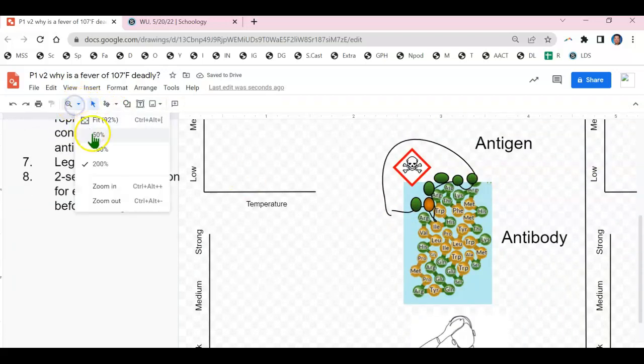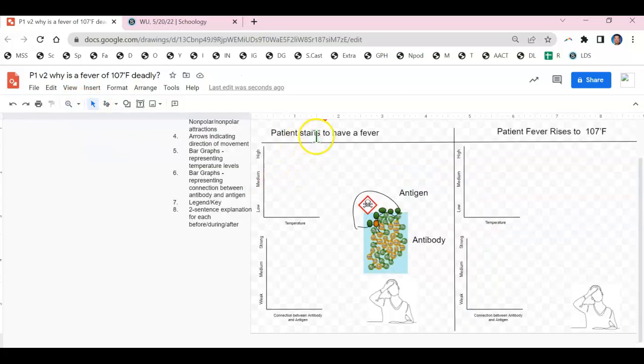And now we can see that when a person starts to have a fever, the antigen and antibody have been connected strongly due to the antigen fitting perfectly inside of the antibody and the attraction between the polar regions of both molecules as well as the nonpolar regions.